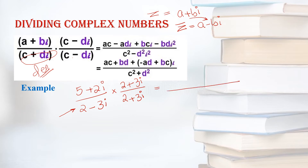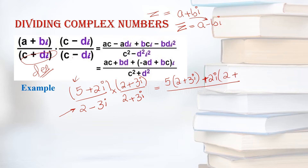Now look at (5 + 2i) in the numerator times (2 + 3i). You have to perform the multiplication method — take the first term of the first bracket and multiply it with the complete second bracket. After that, take the second term, which is +2i, from the first bracket and multiply it with all the terms in the second bracket.